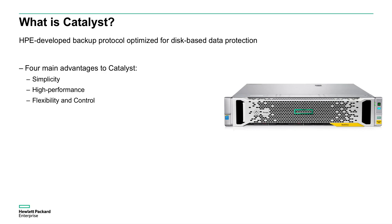Flexibility and control. Catalyst allows users to do more than just create fast, deduplicated backups. Catalyst copy can create secondary copies of backups for off-site storage and works with CloudBank storage to be able to store backup data in the cloud. All of this is managed from within the user's data protection application for complete control of backups, replication, and cloud storage.